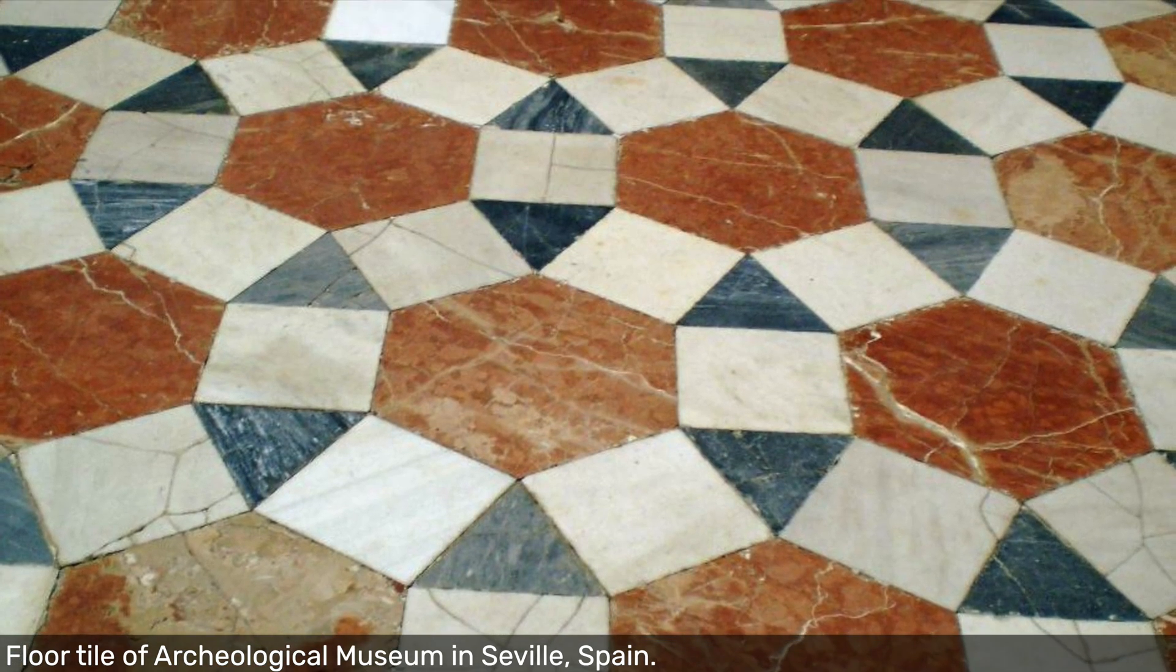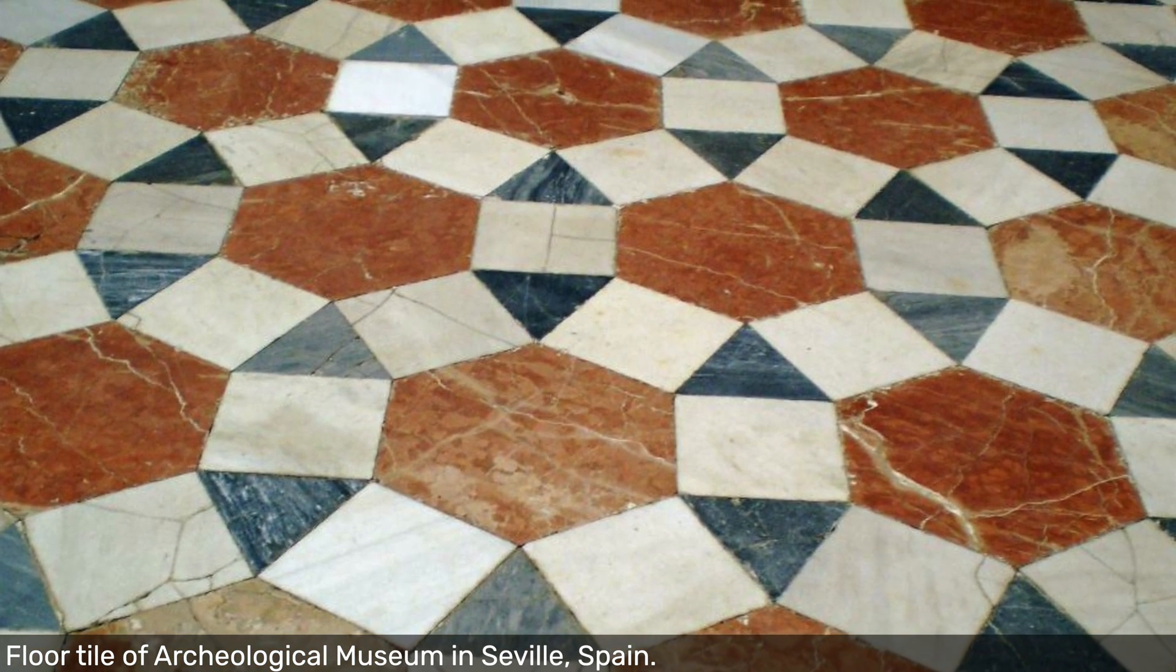You'll notice that it has three different types of tiles: hexagons, squares, and equilateral triangles.